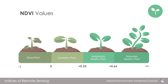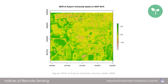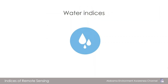The figure shown explains typical NDVI values for different ecosystems and how we can understand different types of forests or canopies by visualizing NDVI values. This figure shows the NDVI map of Auburn University. Now, let's talk about another popular and very useful index: water indices.